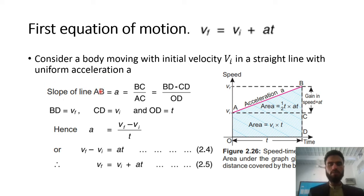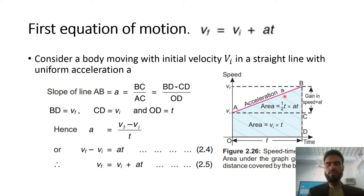We know that the slope of the Speed-Time graph gives us Acceleration. So if we find the slope of this Speed-Time graph, it will give us Acceleration. The slope of line AB equals Acceleration. To find this slope, we construct a triangle from this line. To find the slope of AB, we divide BC (the perpendicular side) by AC (the base of the triangle).